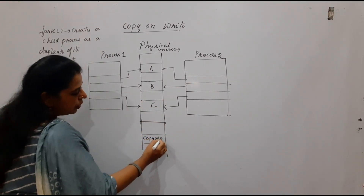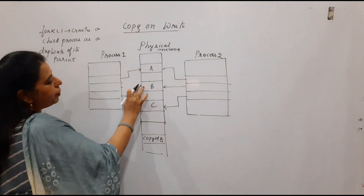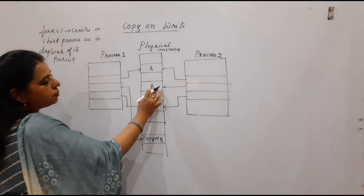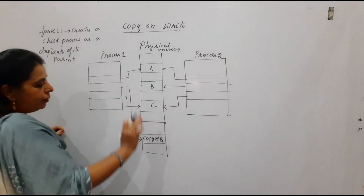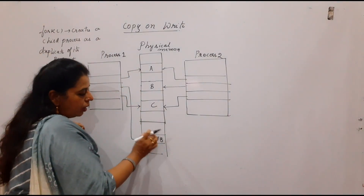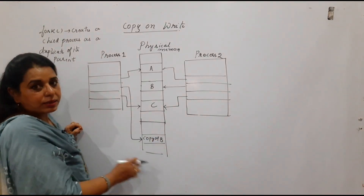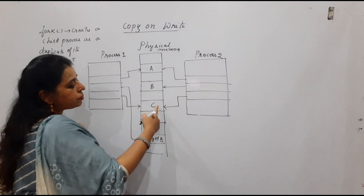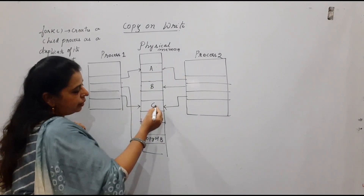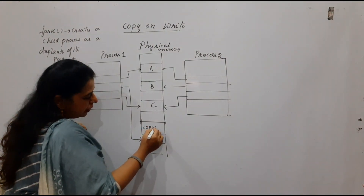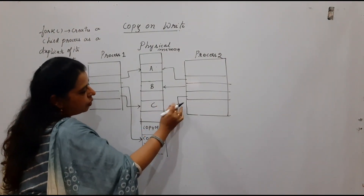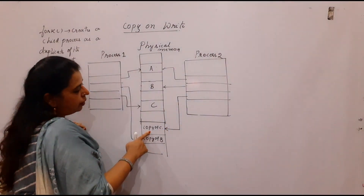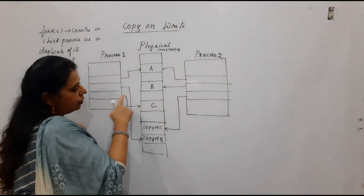In future, process one should always access this copy of B, not the original page. The original page is now accessible only by the child process. Similarly, if the child process wants to modify page C, a copy of C will be created. After the copy is created, the child process will always refer to that copy, while the original page is referred to by the parent.